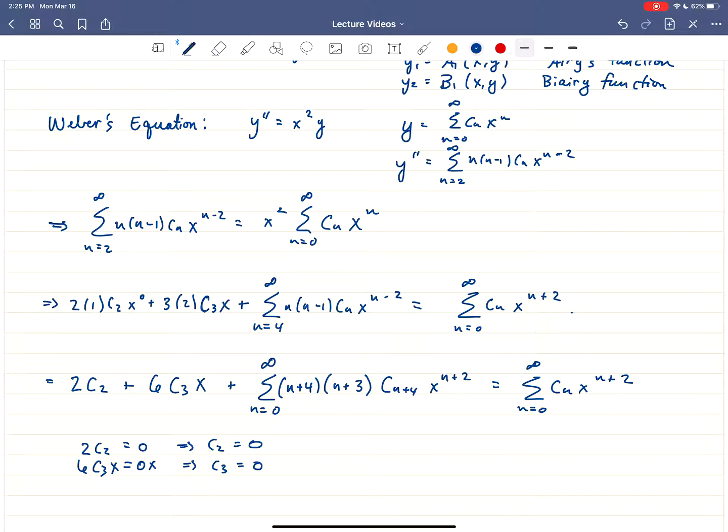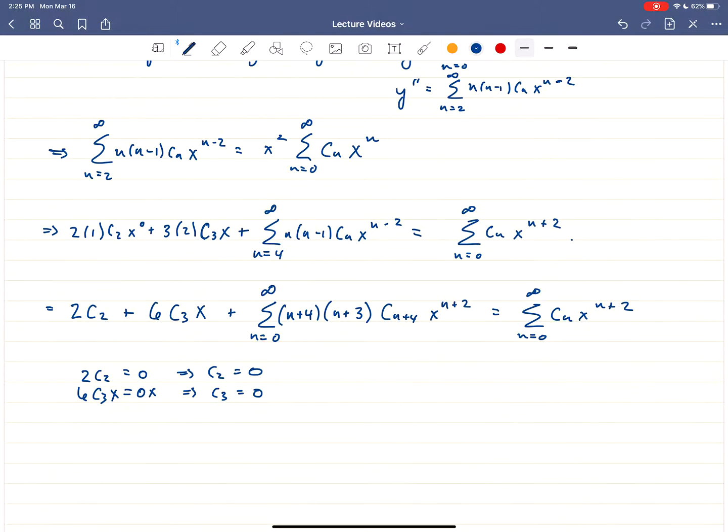This is a second degree ordinary differential equation. So that means that we're going to have two constants, right? Because it's kind of like we anti-differentiate twice. You get two constants of integration, basically. So c₀ and c₁. Also, we know c₂ and c₃ have to both be 0, but other than that, we don't have any restrictions. So we know that c₀, we're going to call it A. c₁, we're going to call it B.